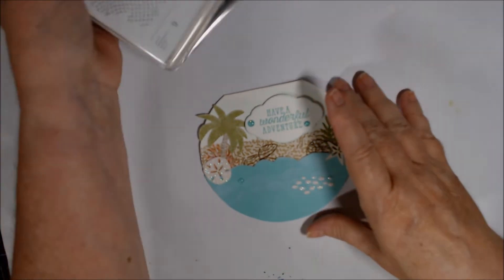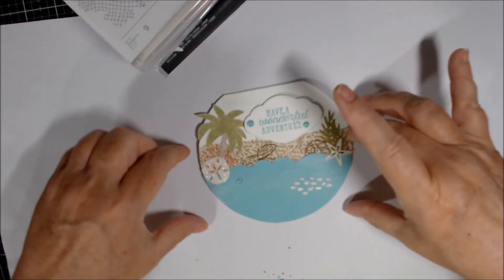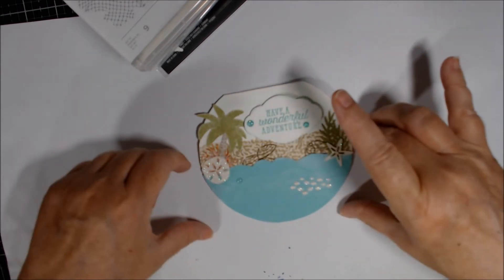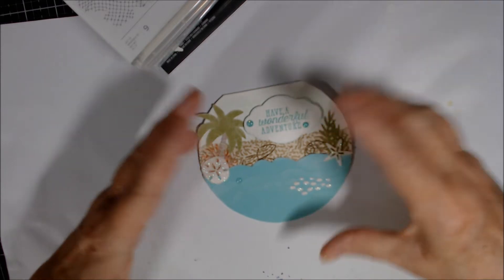So I took a whole circle and, I'm sorry, no I didn't. I took a piece of Coastal Cabana that was sort of a rectangle scrap that I had. But then I cut it along one of the embossing wave things.